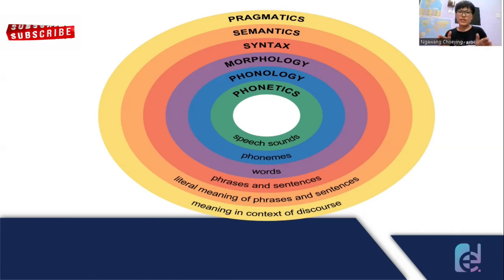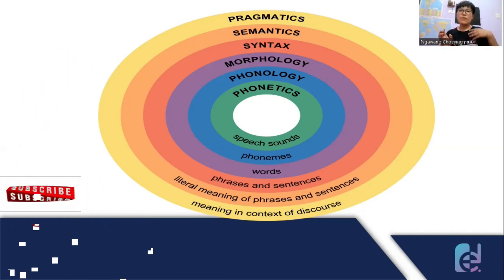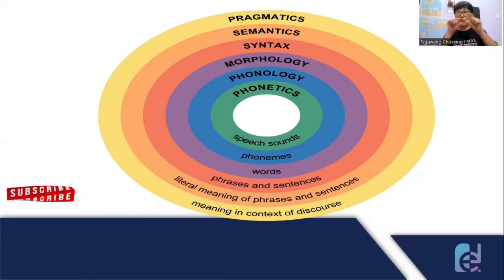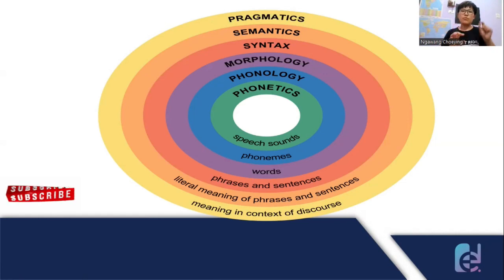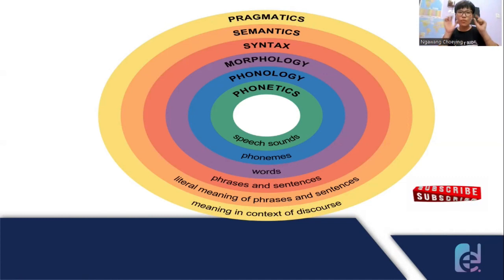After we study the sound system, we make a word. Those words are called morphology. What is morphology? Let's take the example of 'book' again. Book is a word — B-O-O-K. Book is made up of four letters with three sounds: B, O, K. Those sounds are called phonetics, and the word itself is called morphology.